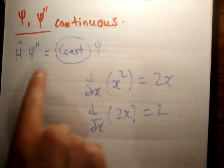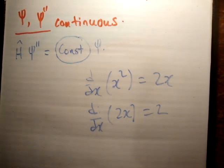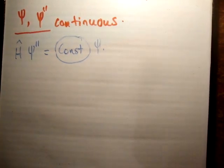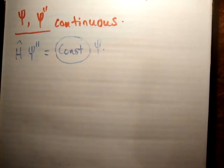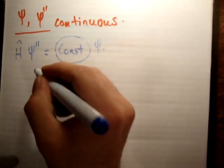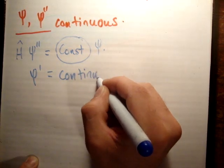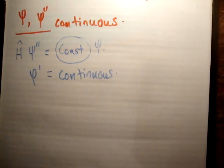So this is the same thing here — we're saying that our second derivative must be constant, or it must be finite. Therefore, the second derivative must be finite, and therefore the first derivative must be continuous. The first derivative is continuous because if it was not continuous, then you would not be able to get a value for psi double prime.